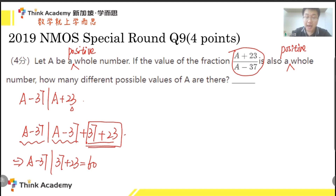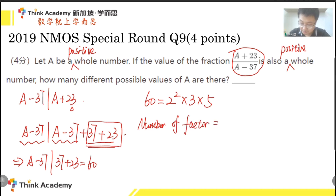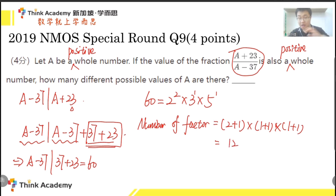The question now becomes: how many different factors does 60 have? We can write 60 as 2² × 3 × 5. So the number of factors is (2+1)(1+1)(1+1) = 12. There are 12 different factors of 60. Therefore, there are 12 different values of (a − 37), which means there are 12 different values of a.